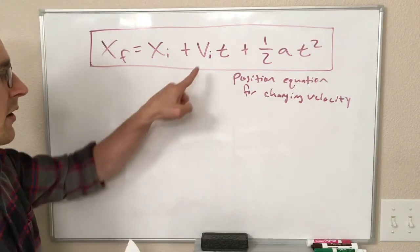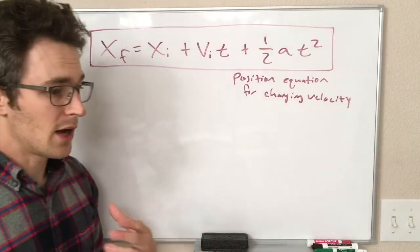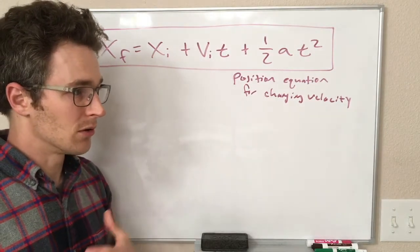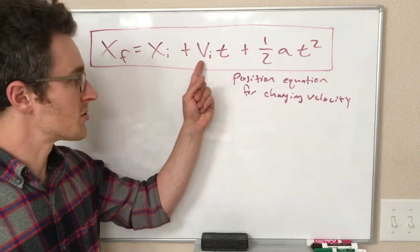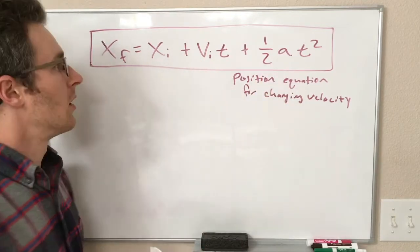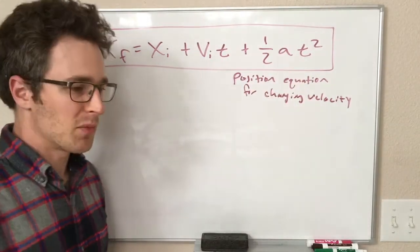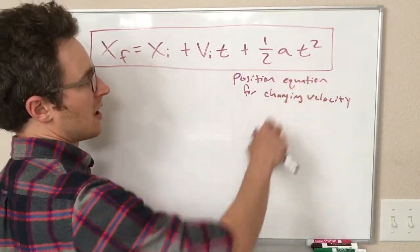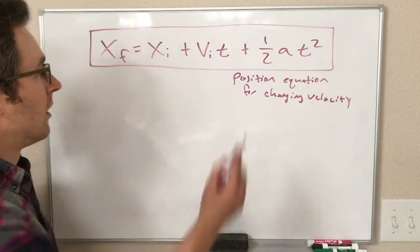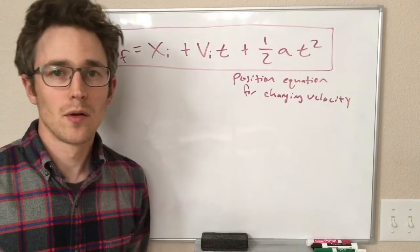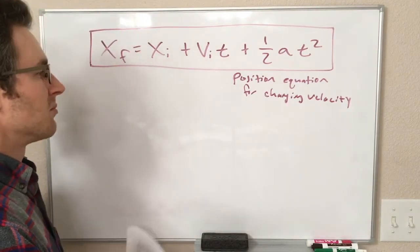So a couple things to point out here. Our velocity is the initial velocity. So our velocity is changing from the beginning of our motion to the end of our motion. This is where the velocity starts. A is our acceleration. Both of these are the same times. That's how much time has gone by from the beginning to the end. And this time is squared. So we have an equation that is no longer linear. This is the equation for a parabola, and more on why that's important in a little bit.